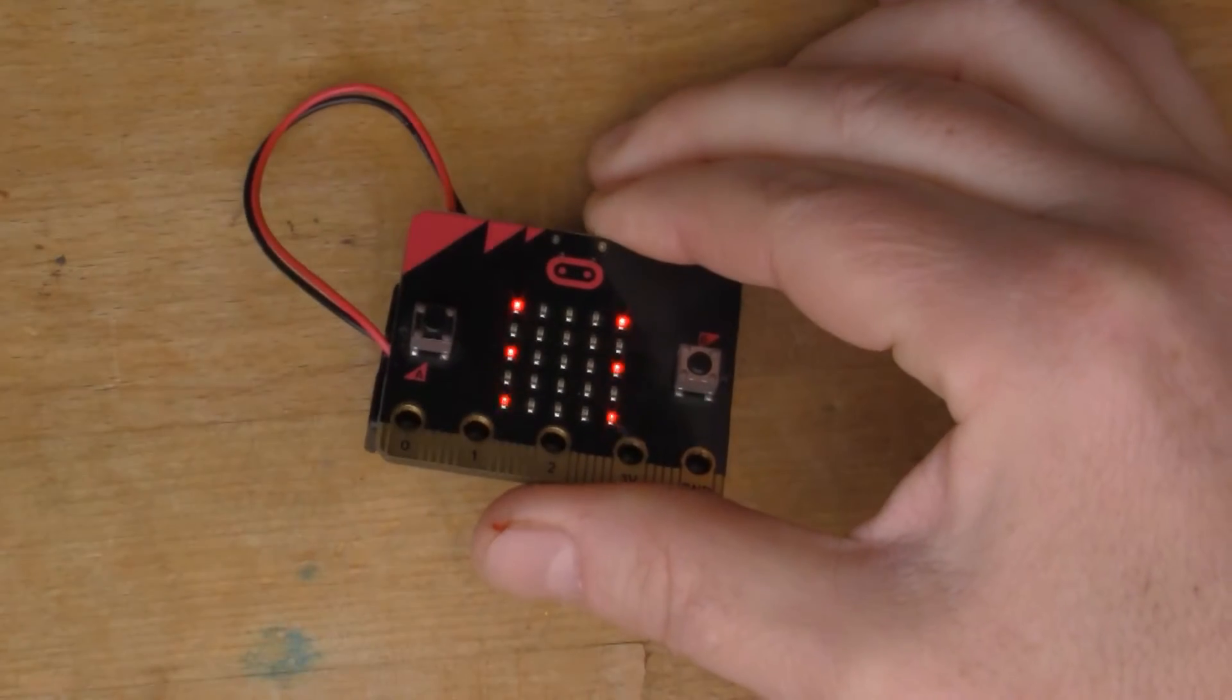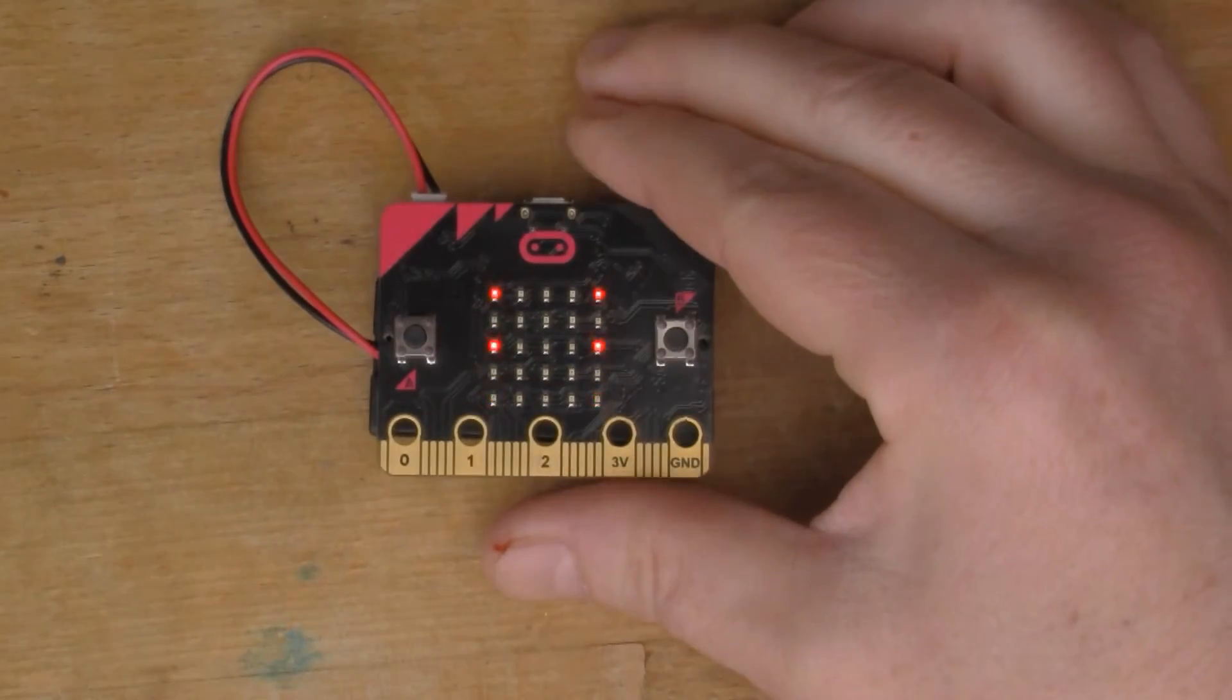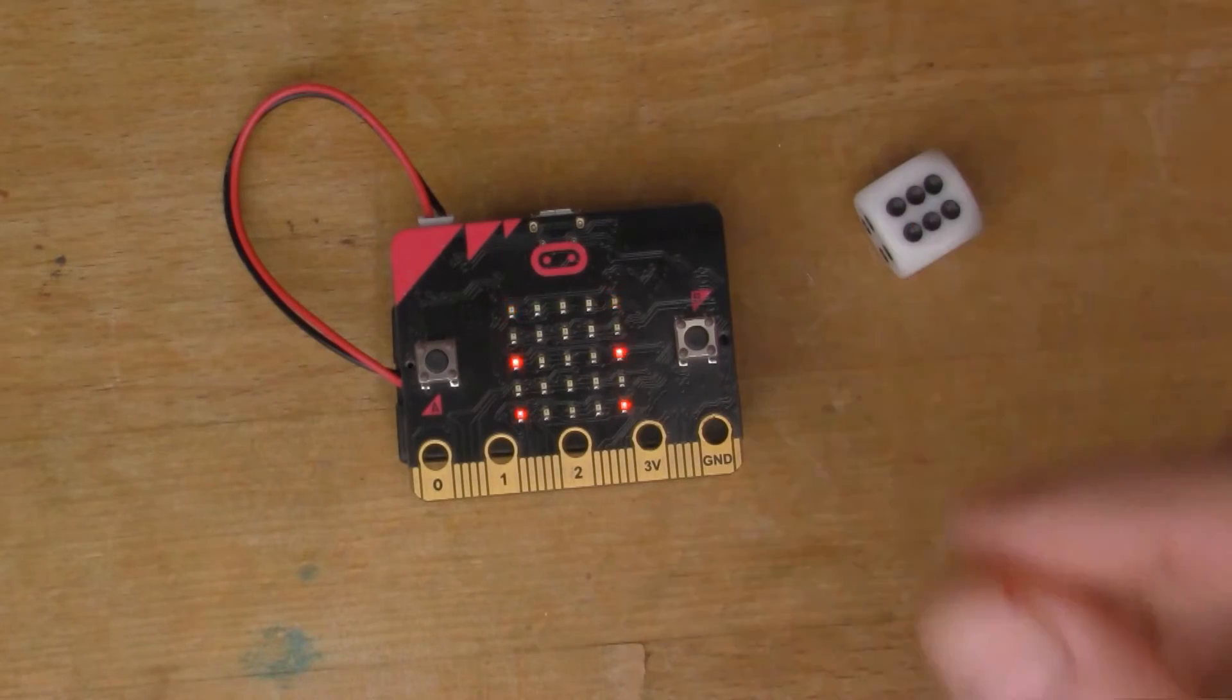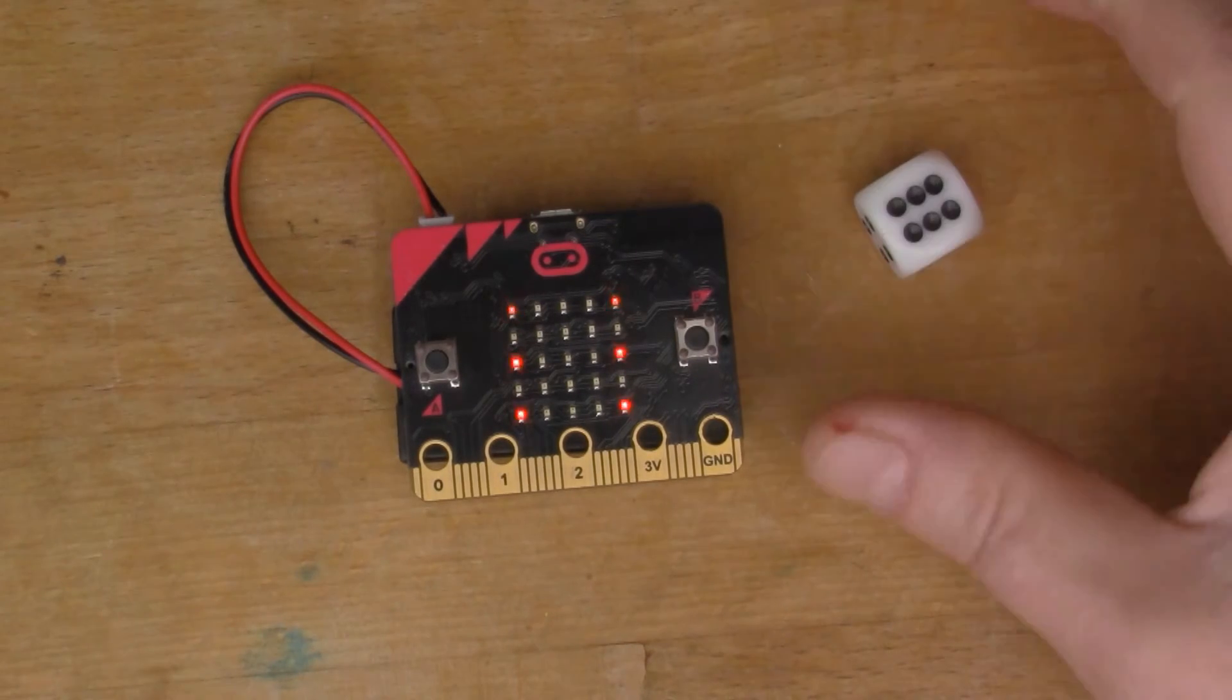And that time it gives us a six. So quite a simple idea, turn the micro:bit into electronic dice.